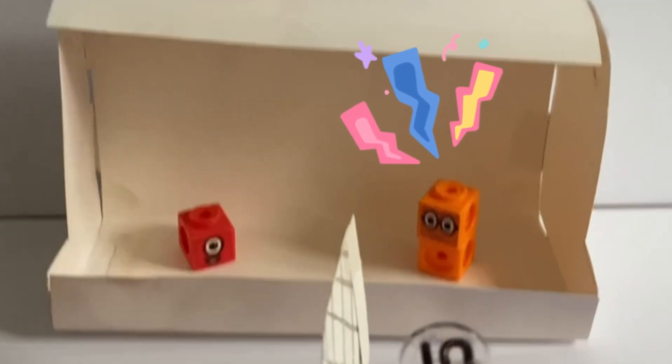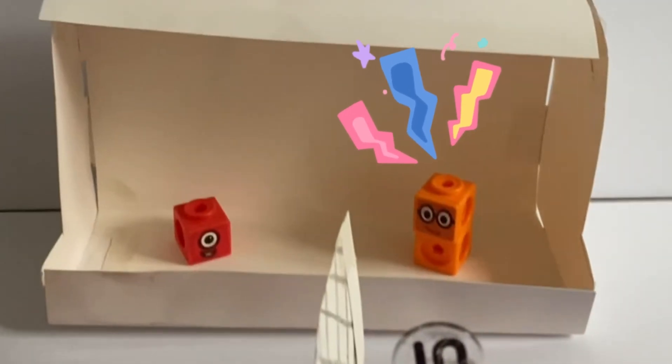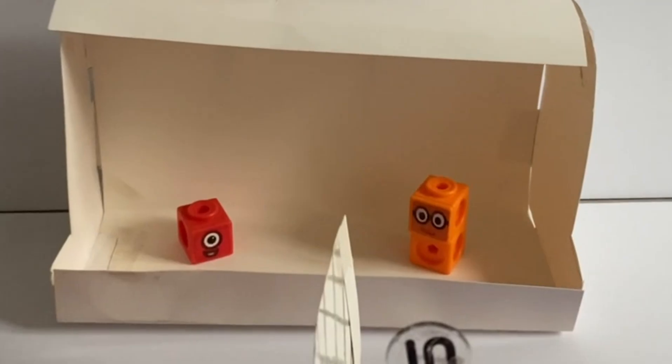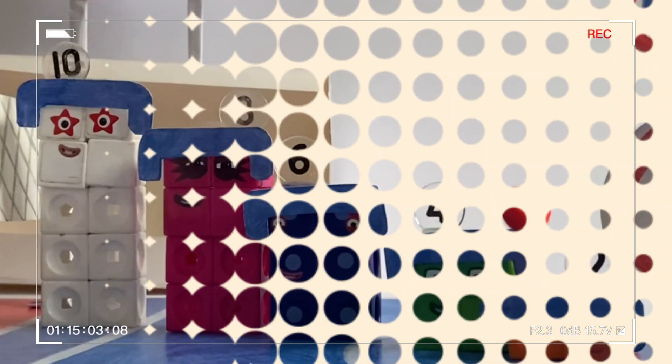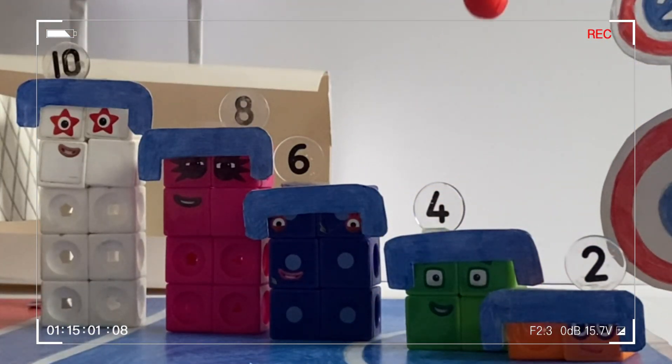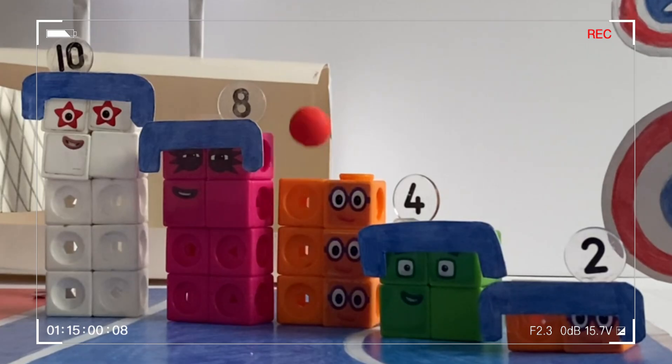Now that's two points to the evens. Let's see that again in slow motion. Look at that. The ball starts with two and then passes it to four, which is two lots of two. And six is three lots of two.